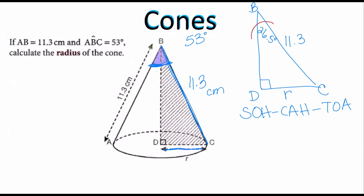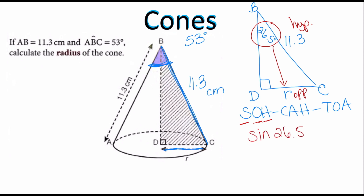We're going to start by identifying the angle, which is 26.5. According to that angle, the radius is the opposite side, and the hypotenuse is going to be 11.3 — remember the hypotenuse is always across from the 90-degree angle, the longest side. Opposite over hypotenuse means we use sine. So the sine of 26.5 equals R over 11.3. Multiplying both sides by 11.3, and making sure your calculator is in degree mode, you should get an answer of approximately 5.04 centimeters.